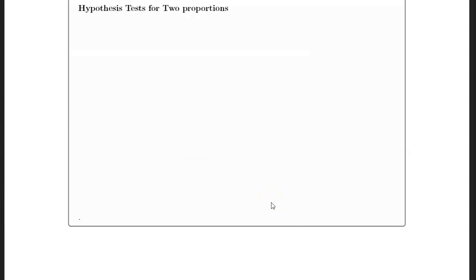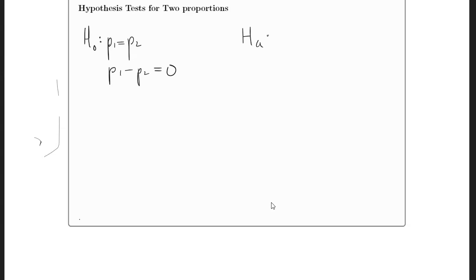For the hypothesis test, the null hypothesis is always that the two proportions are equal — equivalently, that their difference is zero. The alternative hypothesis is that p1 is either greater than p2, less than p2, or not equal to p2, which corresponds to the difference being greater than zero, less than zero, or not equal to zero.